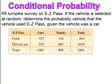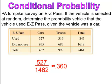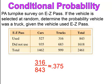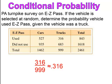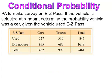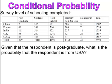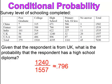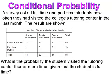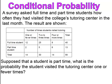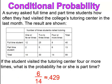Pause and try answers: 0.360. Pause and try: 0.375. Pause and try: 0.316. Pause and try: 0.625. Pause and try: 0.222. Pause and try: 0.796. Pause and try: 0.178. Pause and try: 0.154. And this you should have gotten 0.429.